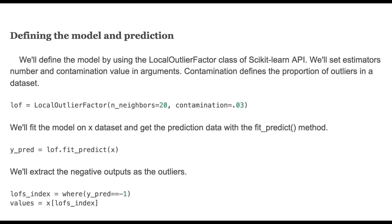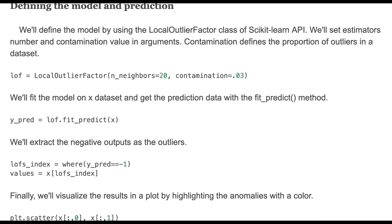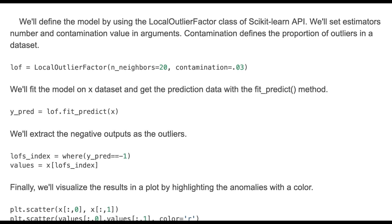We'll define the model by using the LocalOutlierFactor class of the scikit-learn API. We'll set estimators number and contamination value in arguments. Contamination defines the proportion of outliers in a dataset. You can define the model as shown here.